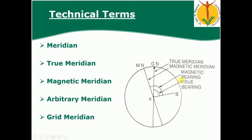The second term is true meridian. The earth has four poles: geographical north pole, geographical south pole, magnetic north pole, and magnetic south pole. True meridian is the line connecting the geographical north pole and geographical south pole of the earth, passing through any point on the surface of the earth.